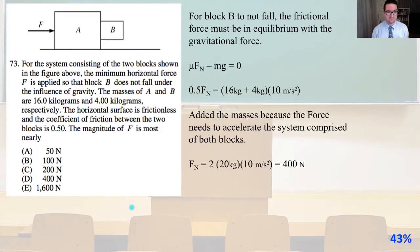So U times F minus MG equals 0. So 0.5 F equals 16 kilograms plus 4 kilograms, that whole quantity times 10 meters per second squared. We added the masses because the force needs to accelerate the system comprised of both blocks. So F of N, the normal force, equals 2 times 20 kilograms times 10 meters per second squared equals 400 newtons. And that is answer D.